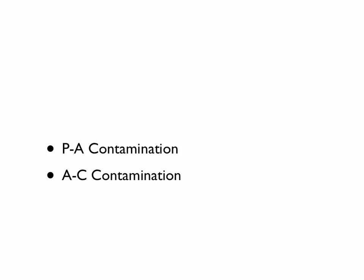So let's go on to decontamination. There are two basic decontaminations: parent-adult contamination, which is prejudice, and adult-child contamination, which is sharing up with delusions.